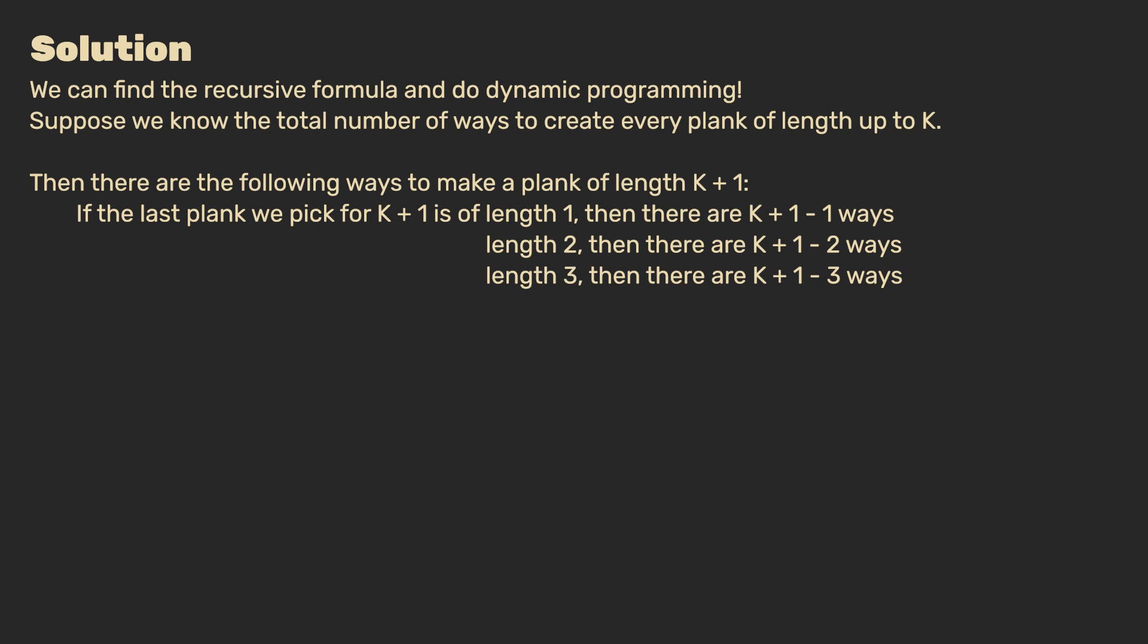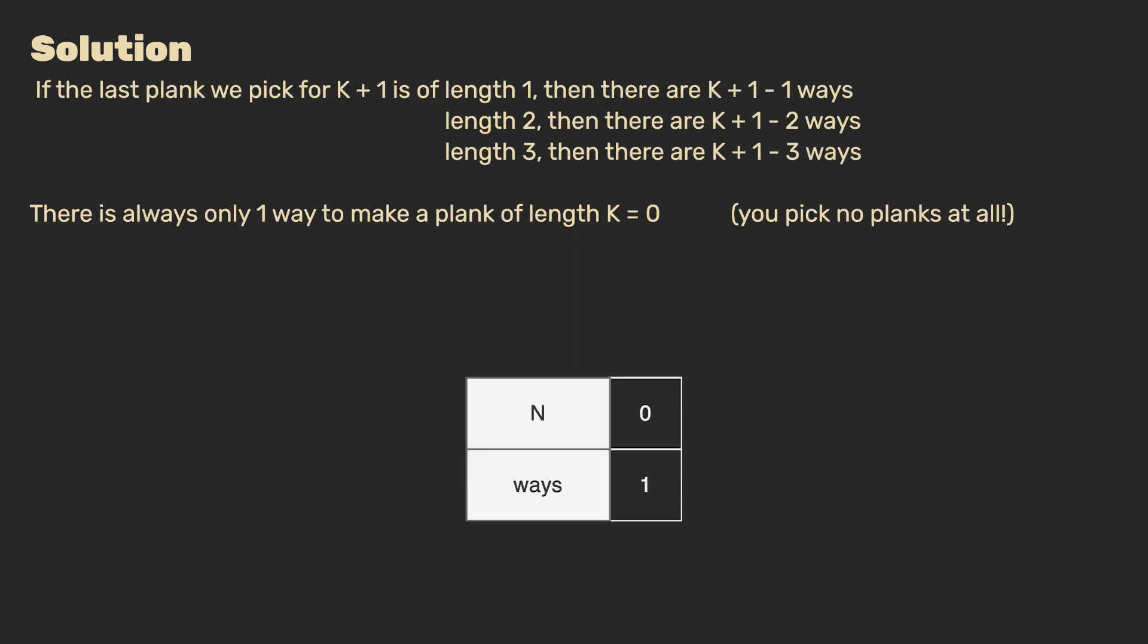So let's do this for the example where n is equal to 4. We start by constructing a table where the first row is our k, or n, if you will. In the bottom row, we will keep track of the number of ways in which we can construct a plank for that particular n. We start with n equals 0. This is a trivial case where we don't pick any pieces at all, and thus there is one way to construct such a plank. Note that you could also start the table at n equals 1, but let's stick with this example for now.